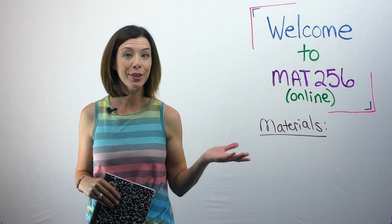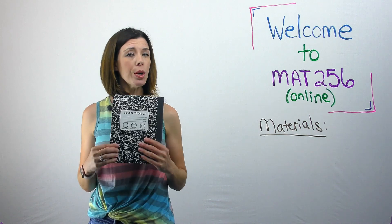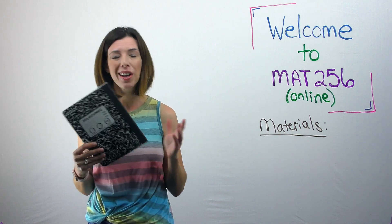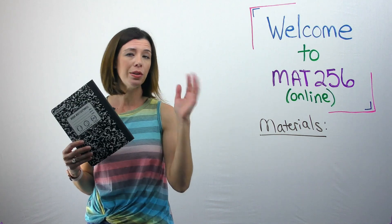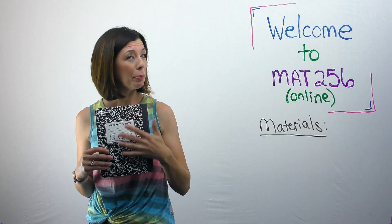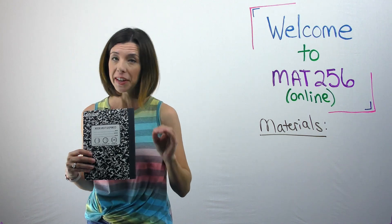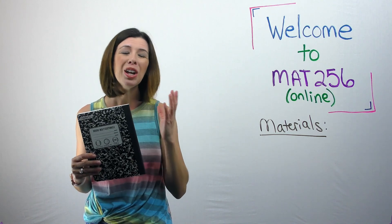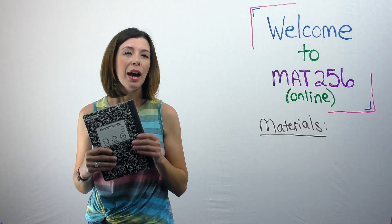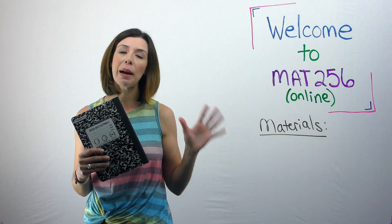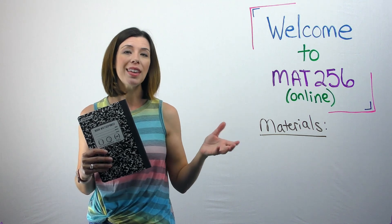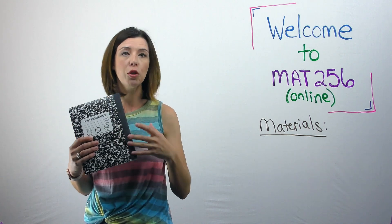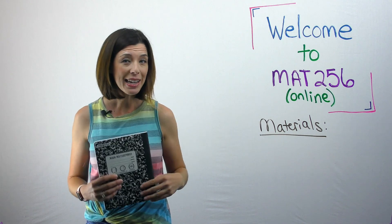Let's talk about the materials you're going to need for this course. You will want to go out and buy a hundred-page composition notebook — notice the really nice binding on the edge. These are about 50 cents at Walmart, Staples, and lots of other places. Make sure it has the sewn binding and not the spiral binding, as this holds up much better over time. Many students also find it nice to have a spiral notebook to show work for homework, and save the composition notebook for notes, foldables, and things like that.